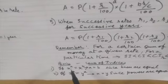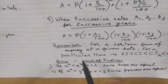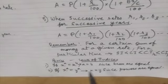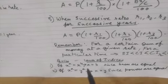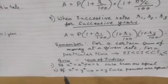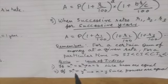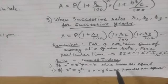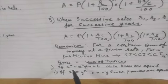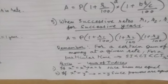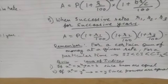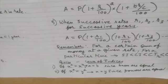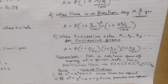Then comes simple interest, which is the lowest. You also need to revise a few laws of indices: if x to the power a equals x to the power b, then a equals b since bases are equal. And if x to the power a equals y to the power b, then x equals y since powers are equal. These laws of indices are required while doing compound interest sums with formulae.